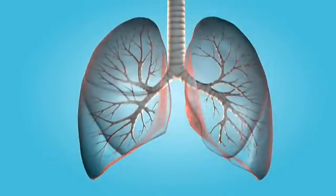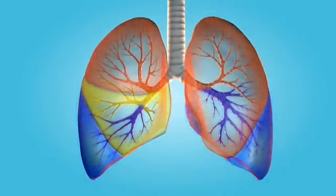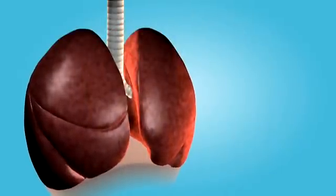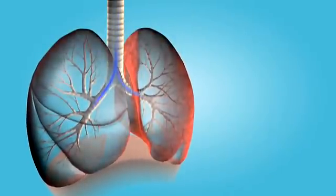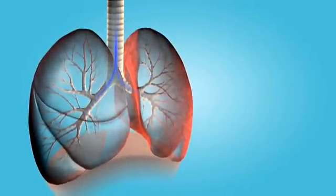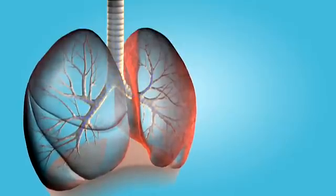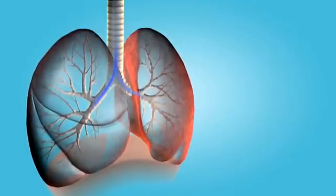Each lobe is supplied with air through a specific series of branching airways called bronchi. During inhalation and exhalation, healthy lungs have a natural elasticity. They expand and contract with the diaphragm as they alternately fill with air and then empty.